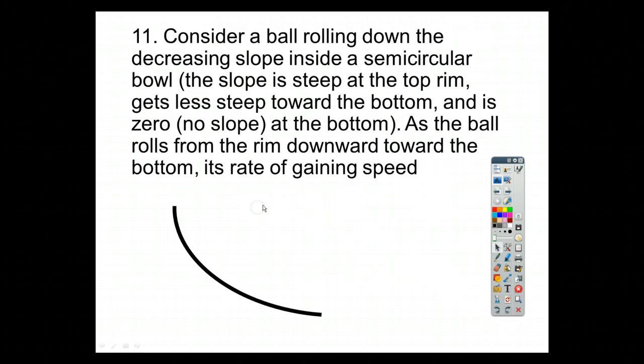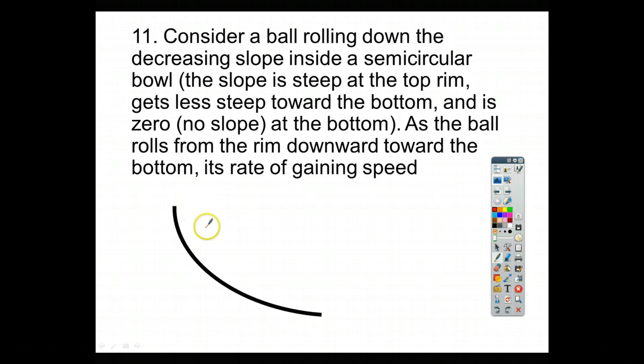For number 11, it says, consider a ball rolling down a decreasing slope inside a semicircular bowl. The slope is steep at the top of the rim. So, you see it's very steep here and it gets less steep towards the bottom of the rim where it's basically going to be zero and just kind of rolls straight. As the ball rolls from the rim downward to the bottom, its rate of gaining speed decreases. So, we see that because the slope isn't as big, the ball will not pick up speed as fast on the way down. So, we're just saying that its acceleration decreases as it moves from the top to the bottom.